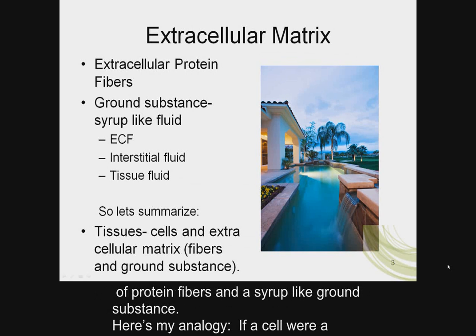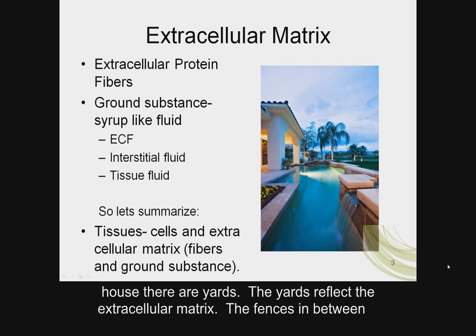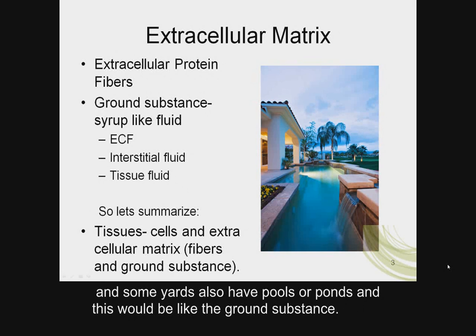Here's an analogy: if a cell were a house, then a group of houses in a neighborhood would be a tissue. In between each house, there are yards — these reflect the extracellular matrix. The fences between the houses provide support and boundaries, much like the extracellular protein fibers. And some yards also have pools or ponds, which would be like the ground substance.